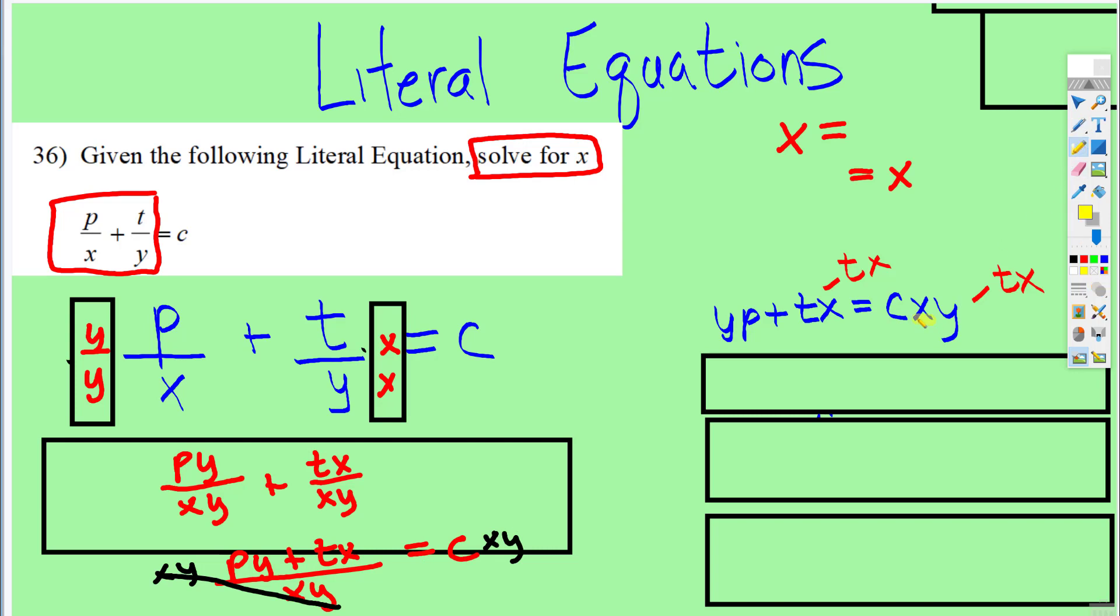Since the x is over here, let's get this x to that side. What I did here is subtract tx on both sides. So now we have py is equal to cxy minus tx.